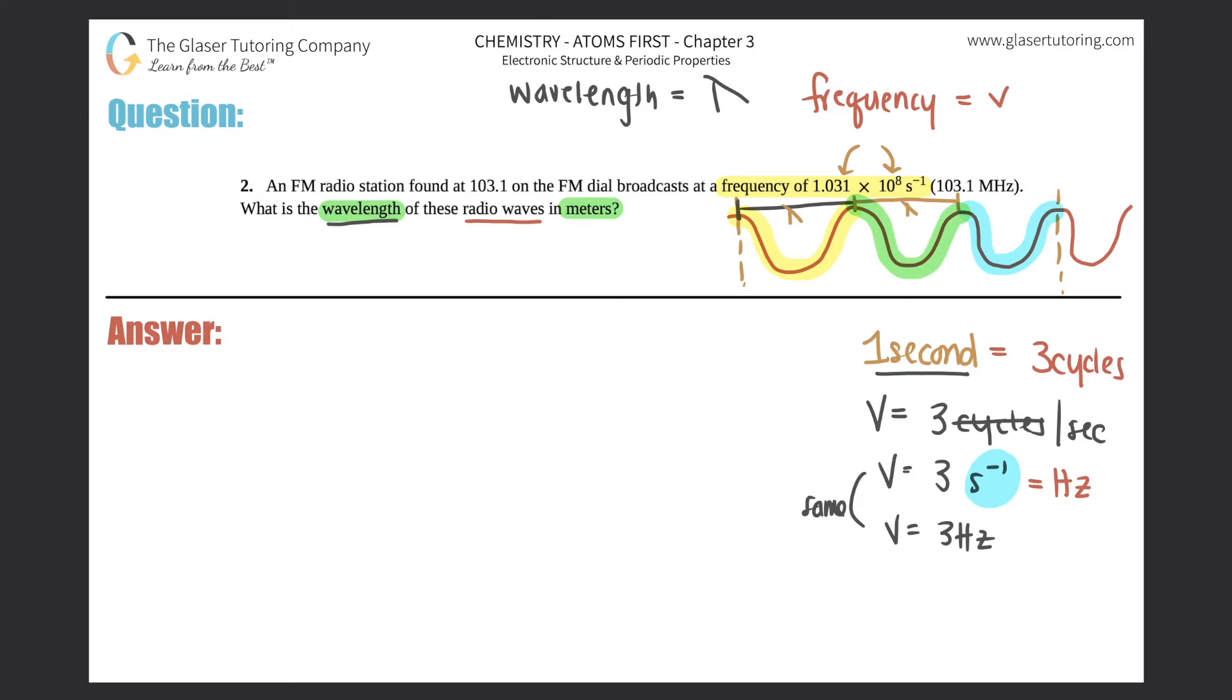Star this formula, memorize this formula. This formula is super important. It is C equals wavelength times frequency. C is a constant number. C is the speed of light. So it's basically how fast light travels. And that's a constant number.